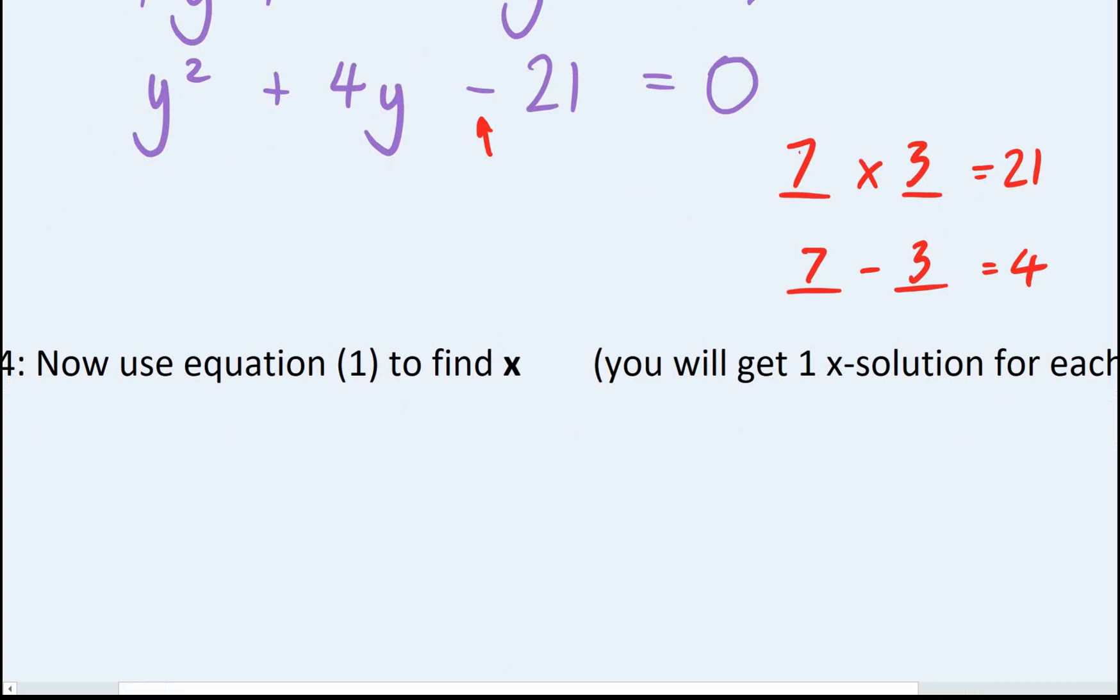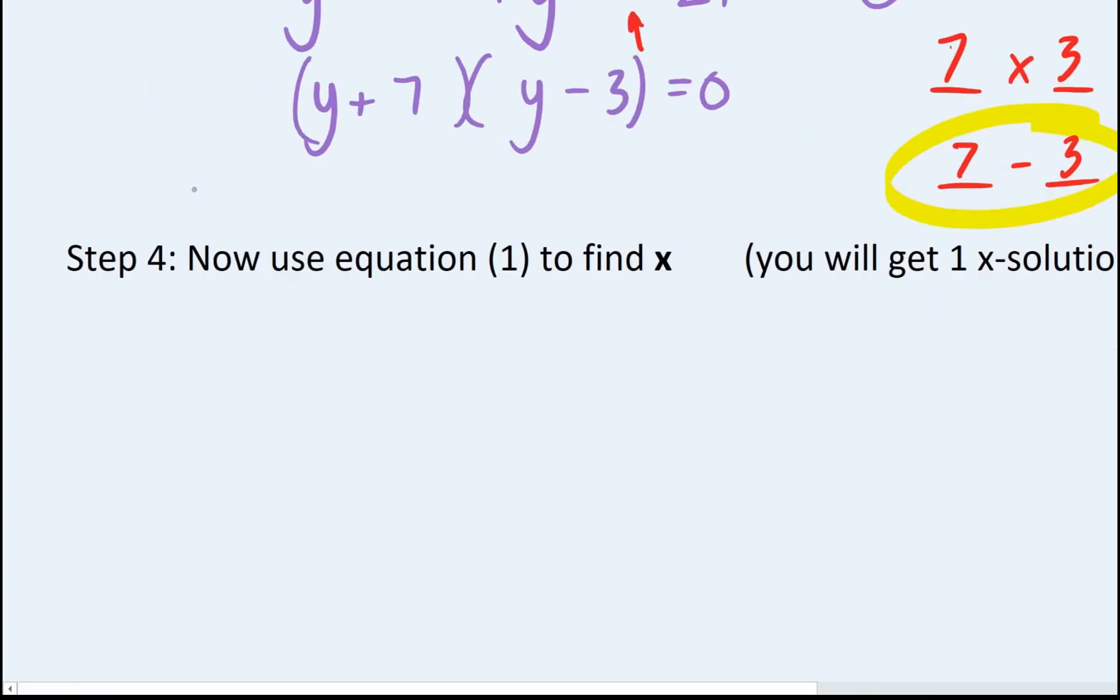Okay? So that means it is going to factorize. If we look at this one here, we're going to have y plus 7 and y minus 3. So y plus 7, y minus 3. That all equals 0, which means we can get our two solutions for y.